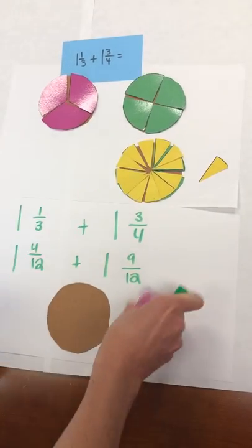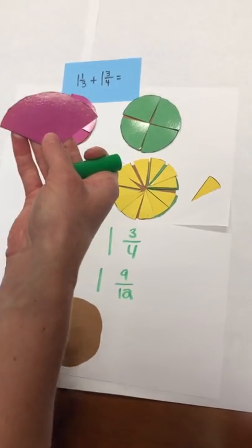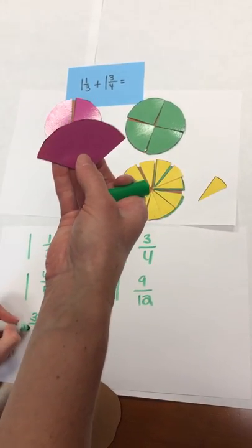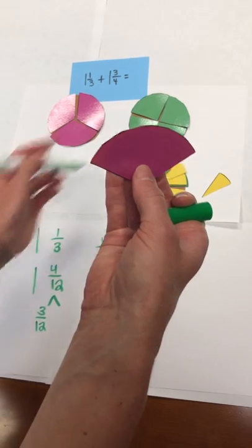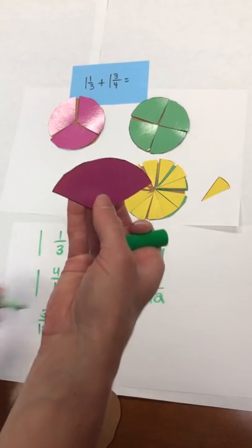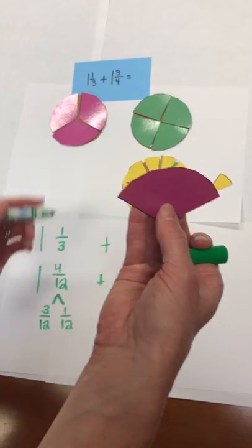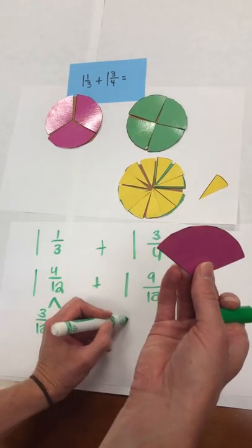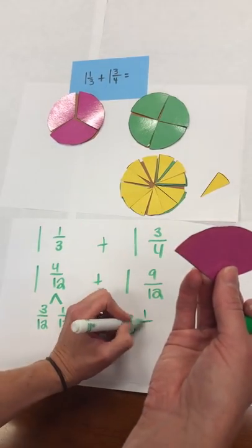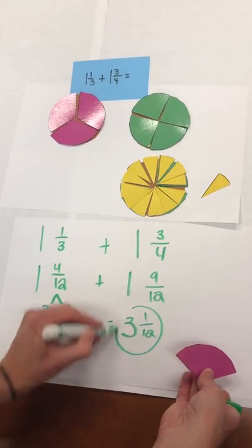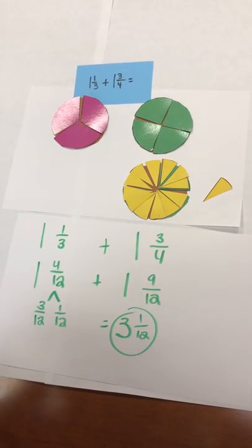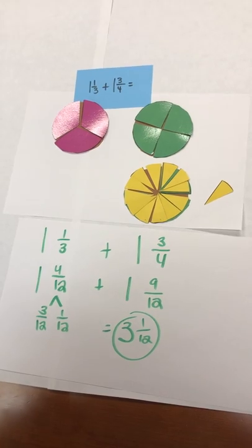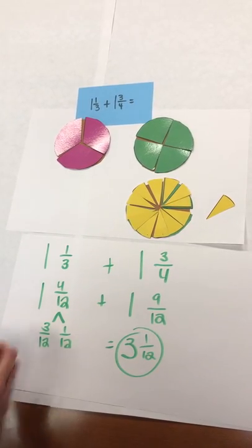What I did with this piece is I took the four-twelfths, I decomposed it into three-twelfths that would fill up the remaining whole and one-twelfth that was left over. And what I was able to do is make one whole, two wholes, three wholes with one-twelfth left over, which would give me three and one-twelfth, which was close to our estimate for the next whole number, which was three.